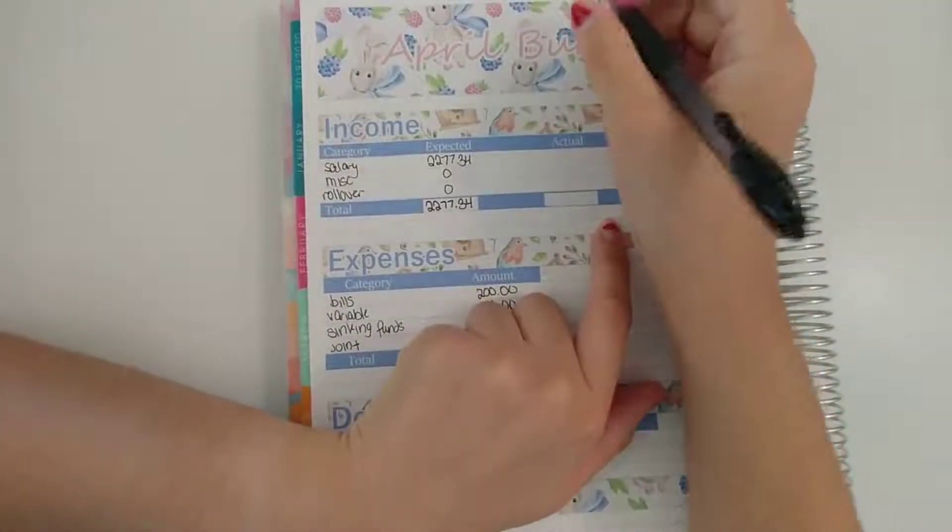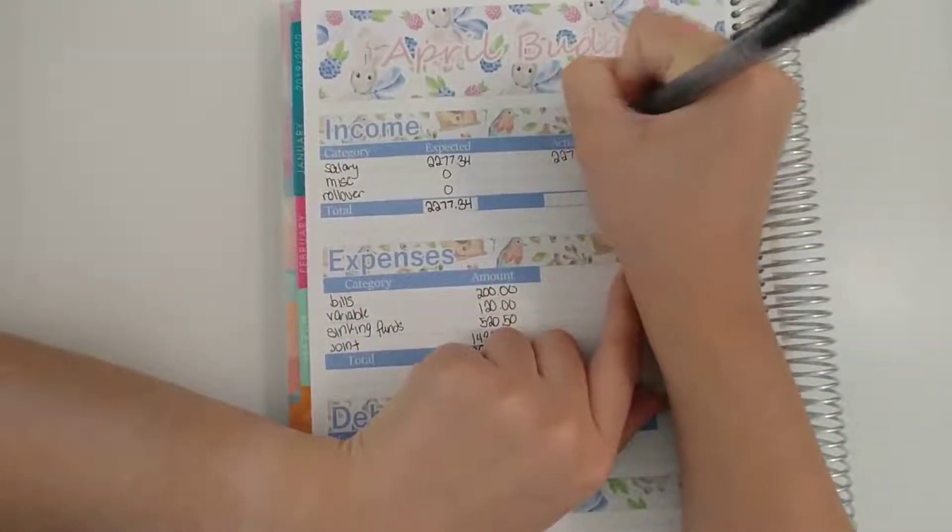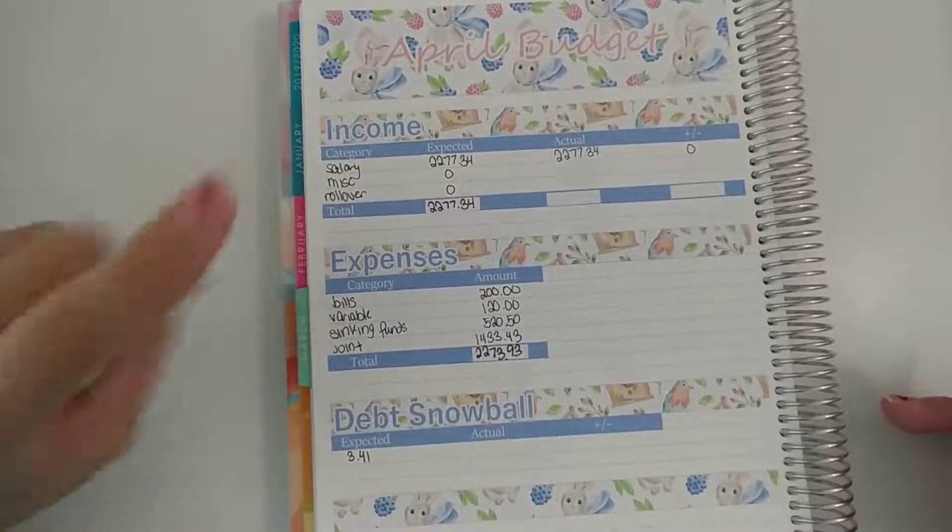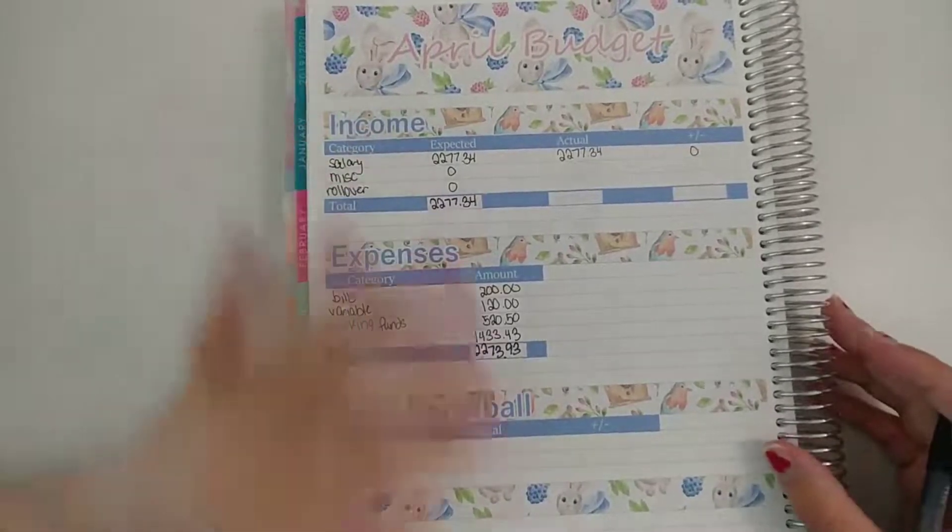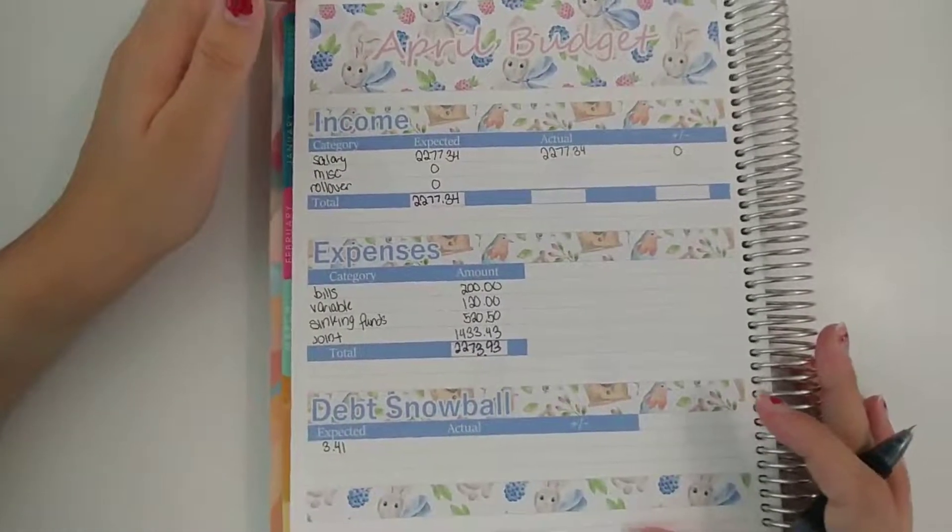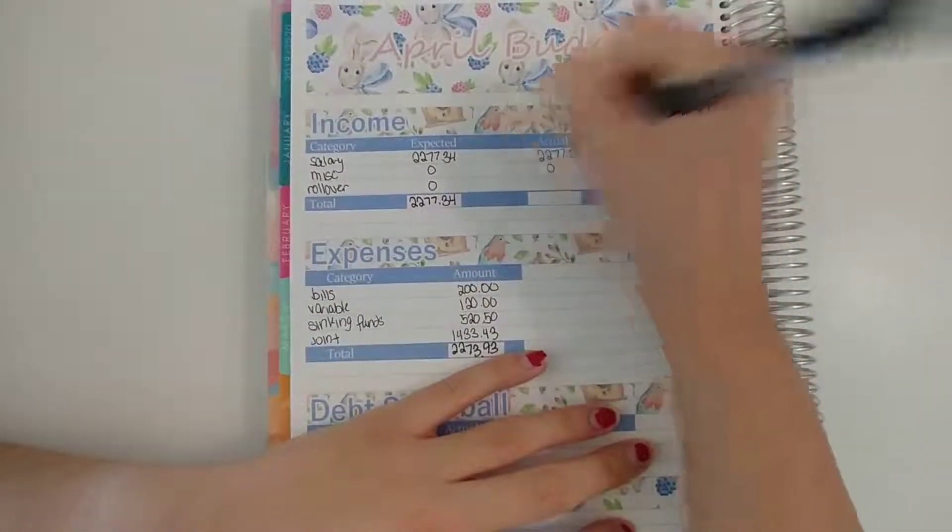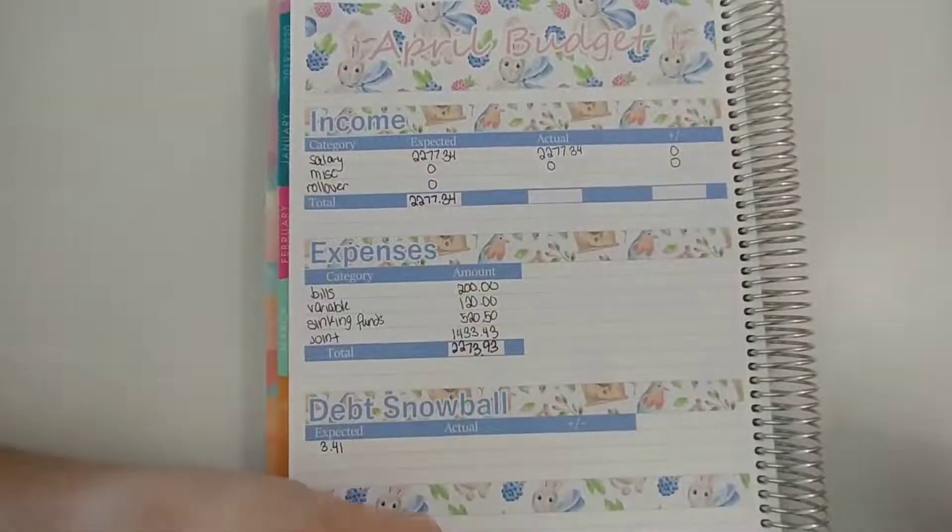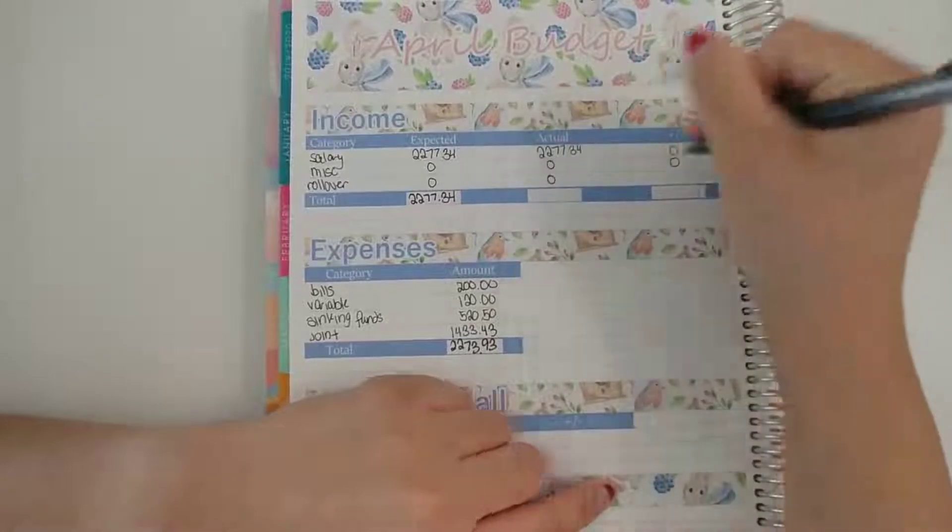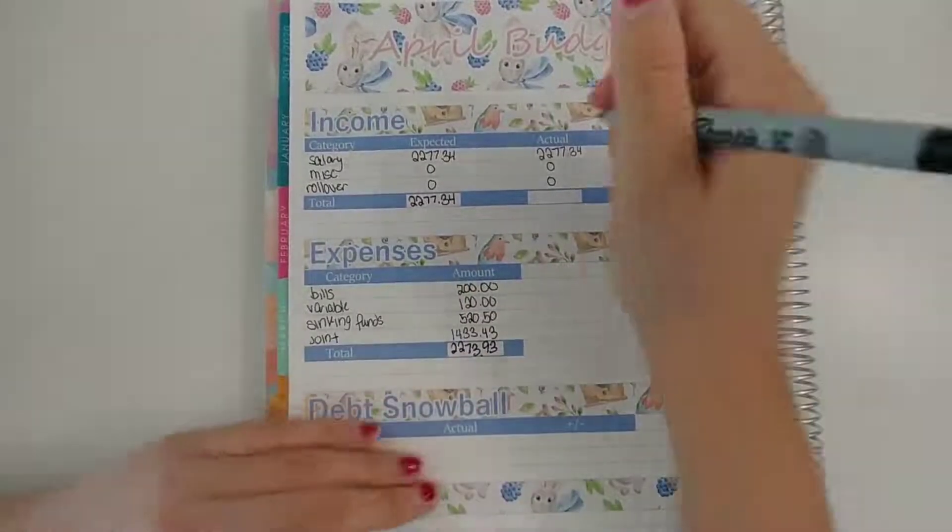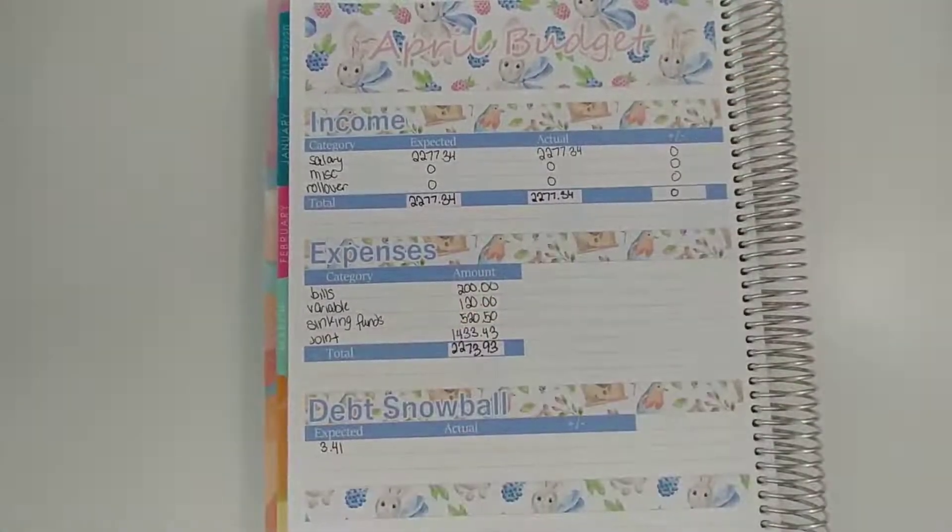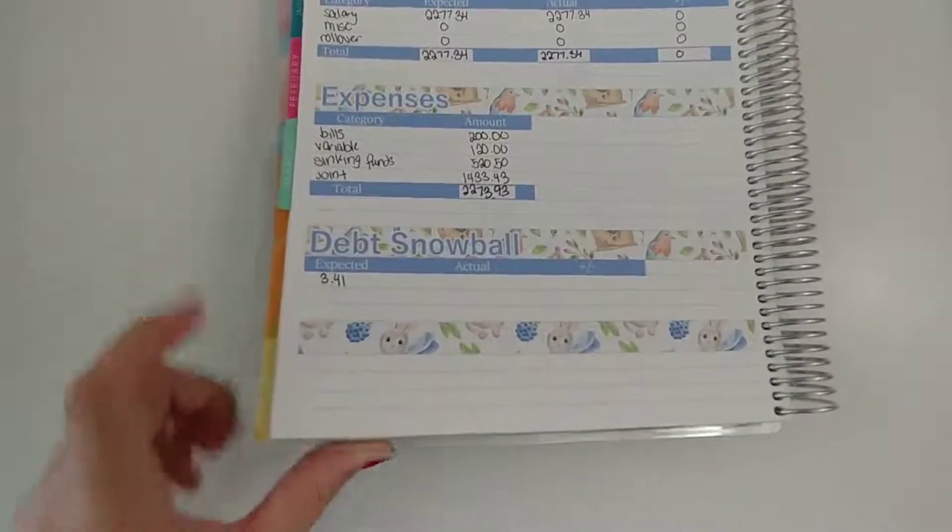Everything is the same as usual. Like I mentioned I might redesign this page but for now I'm going to keep it the same. But actually miscellaneous, I did get my stimulus check this month as well as my tax refund. Although those went straight into savings if you saw my refund video. For now it's going to wait in savings. I'm going to put miscellaneous income as zero since it's just sitting in savings waiting. And rollover was zero as well. So my income was normal this month.